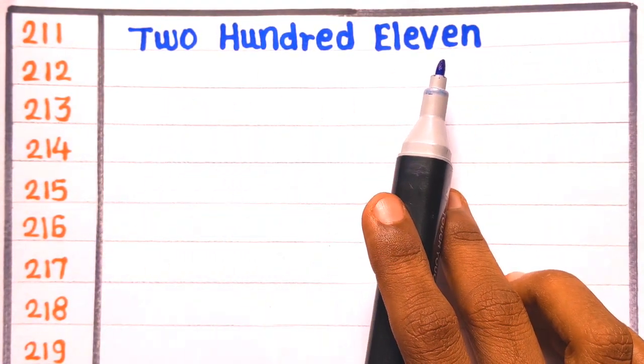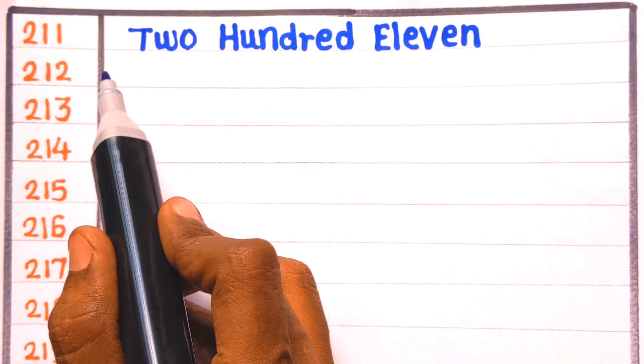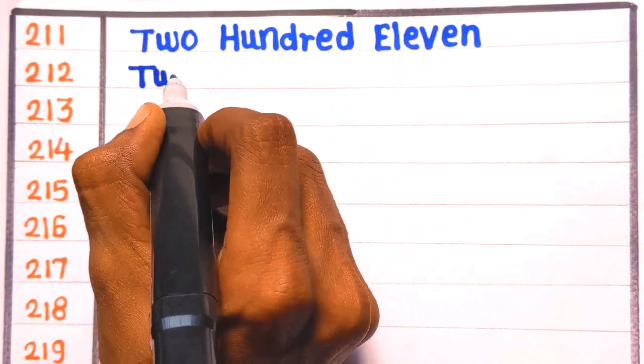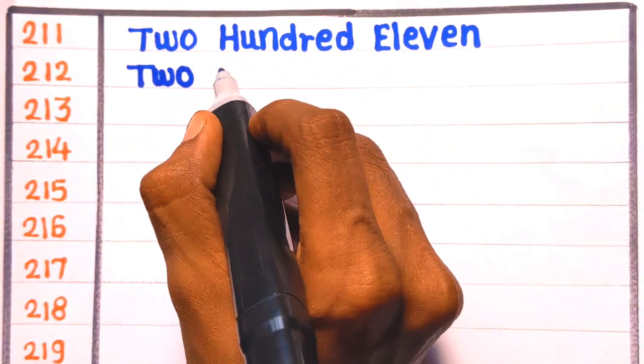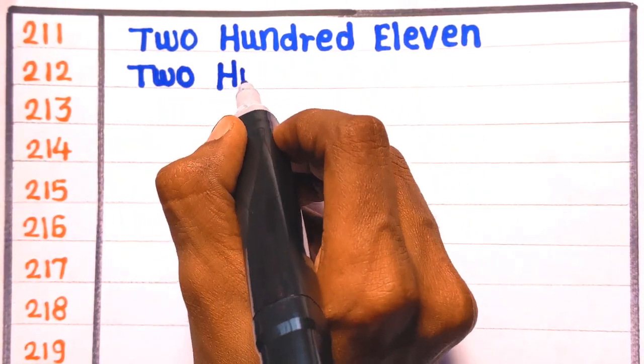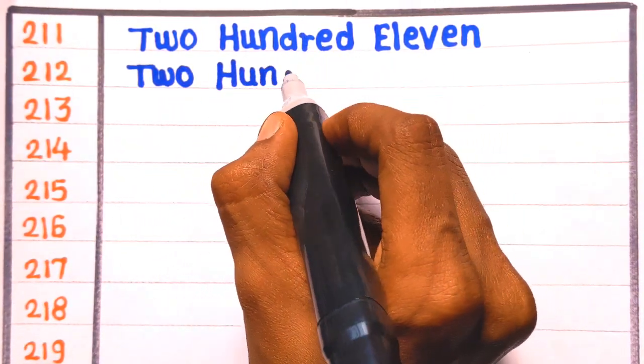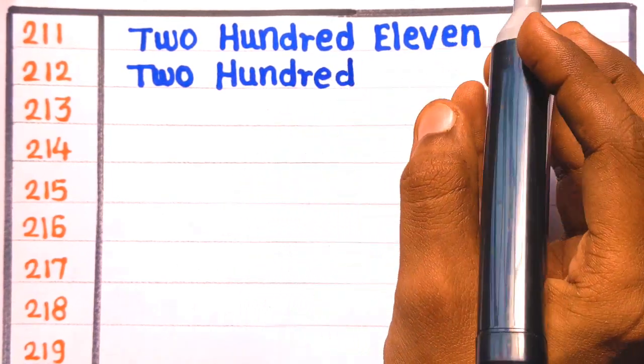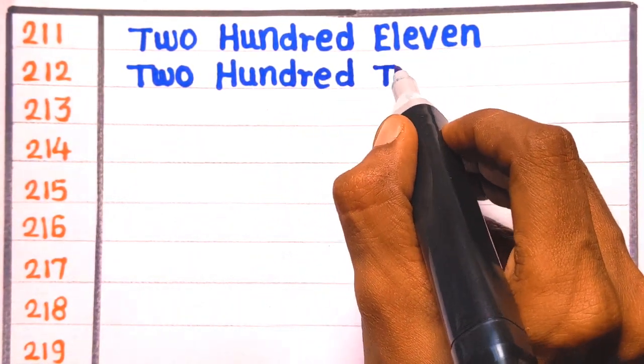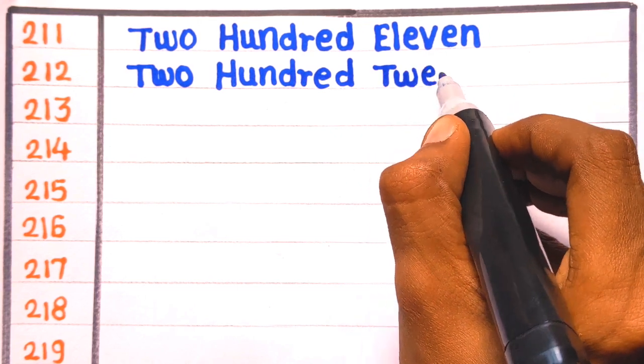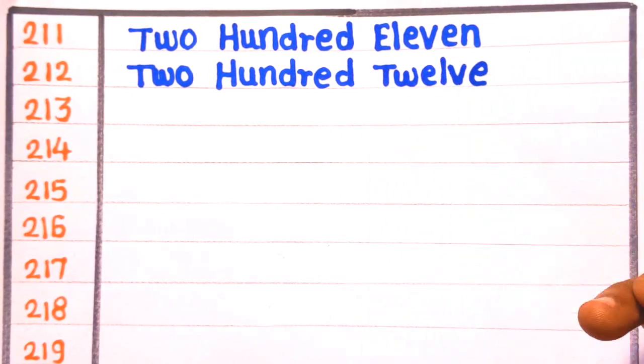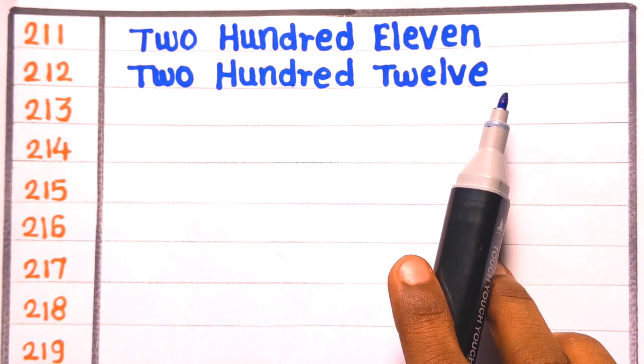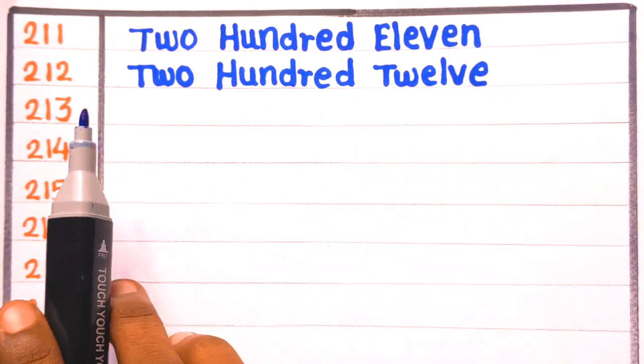Next is 212. T-W-O, two, H-U-N-D-R-E-D, hundred, T-W-E-L-V-E, twelve. Two hundred twelve.